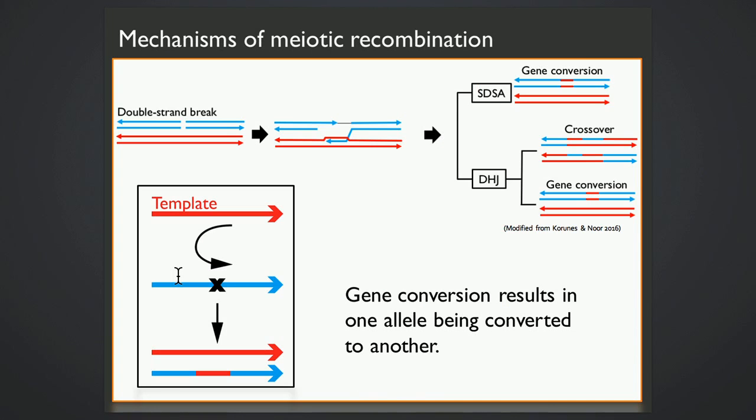When you have a double-strand break in DNA and it's repaired during meiosis, you can get crossing over or you can get non-crossover gene conversion, which you might be a little bit less familiar with.